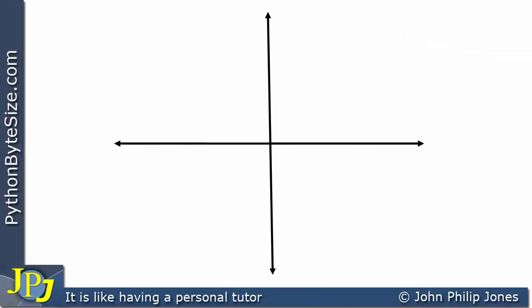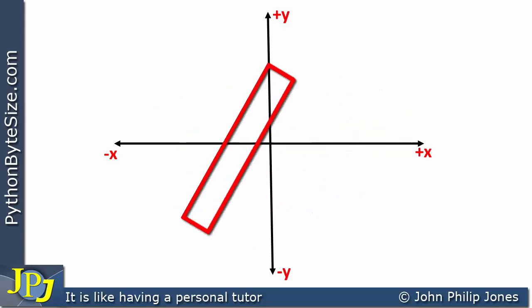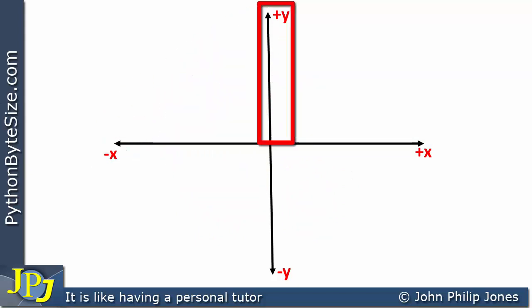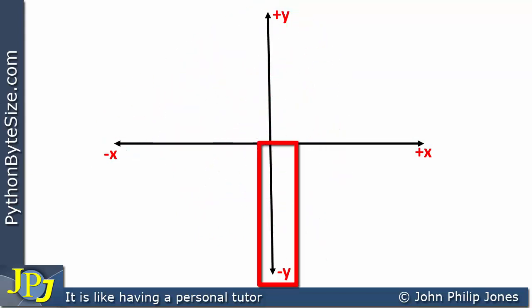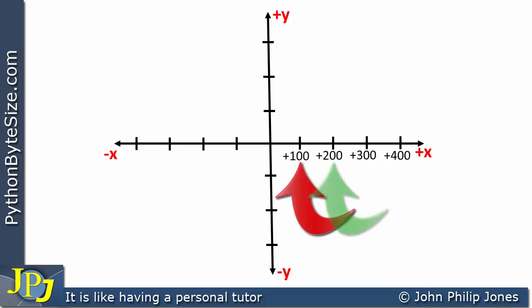Let's consider a graph. I've drawn the axes and labeled them with x and y. The positive values of x are on one side, and the negative values of x on the other. Similarly for y. I'll mark off the axes with equal spaces, and attaching numbers: for positive x we have plus 100, plus 200, plus 300, and plus 400.